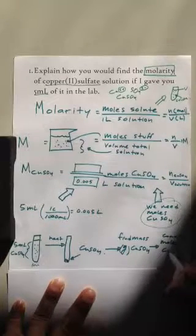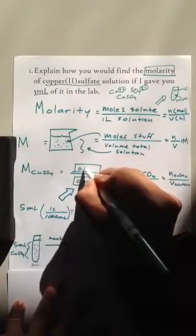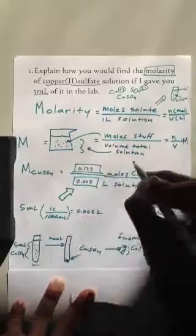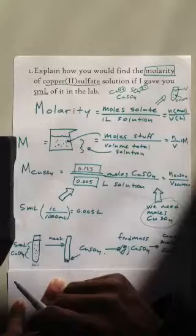And if you have the moles of copper sulfate, say you do the mass and it comes in, and it's like 0.123 moles of copper sulfate. Just divide this number by that number, and you'll get the molarity. And that's all you've got to do.